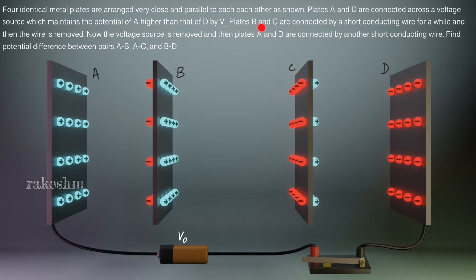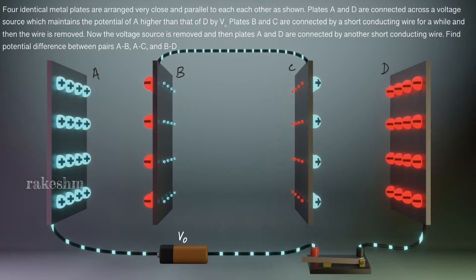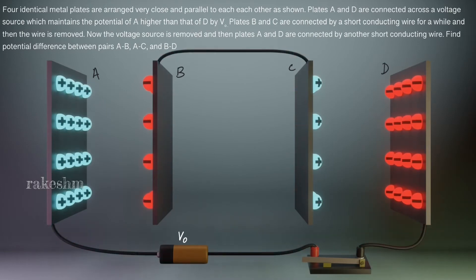Next, plates B and C are connected by a short conducting wire for a while and then the wire is removed. So B and C are connected by a short conducting wire. These both are connected by a conducting wire for a while, and then this wire is removed.